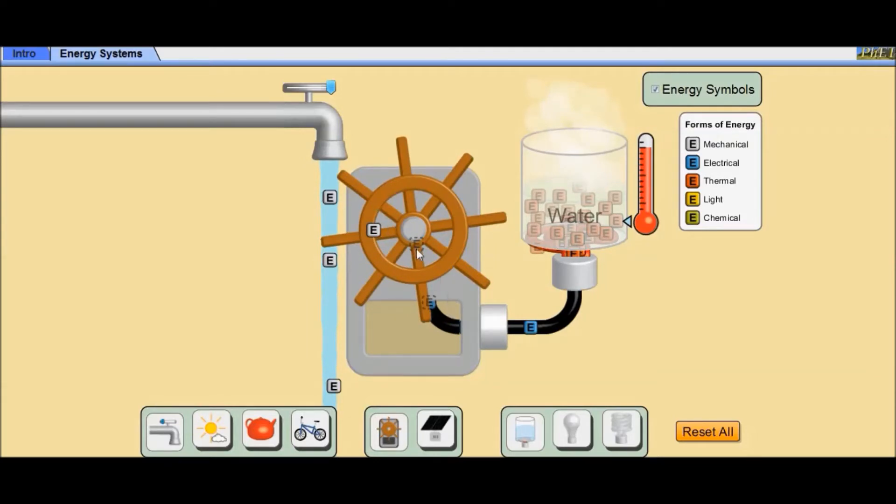The generator coupled with the turbine produces electrical energy from the mechanical input obtained from the turbine, which is represented by blue color bars here. This electrical energy is supplied to the heater placed in a container of water. The heater converts the electrical energy into thermal or heat energy and heats up the water, seen as red color blocks. Due to this heat energy, the water gets boiled and forms into steam. With a rise in temperature, we can observe a rise in thermometer reading.